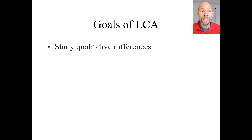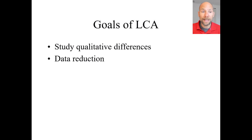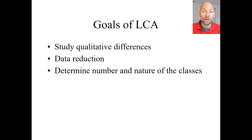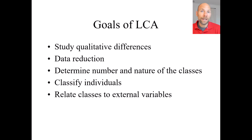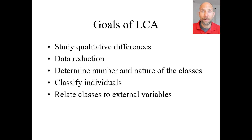In summary, the goals of LCA are to study qualitative differences between individuals and determine latent typologies, to reduce data contained in item response patterns, to determine the number and nature of latent classes and their relative sizes, to classify individuals into their most likely latent class, and to relate latent classes to external variables or covariates — for example, examining gender differences in computer game preference, or whether classes are related to age.